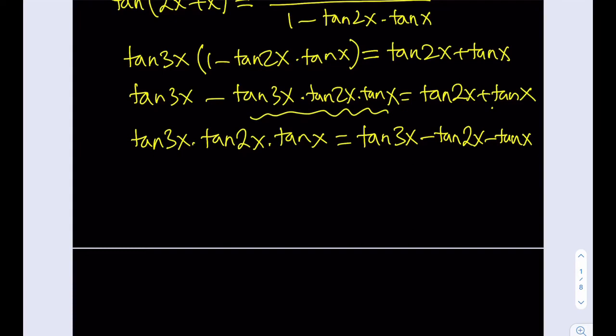So integrating both sides is going to be equivalent. The integral of tangent 3x times tangent 2x times tangent x dx is going to be the same thing as the integral of tangent 3x minus tangent 2x minus tangent x.